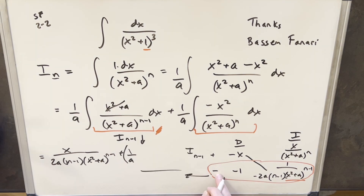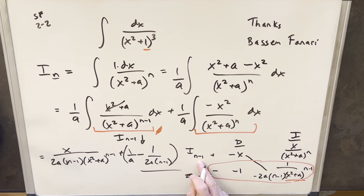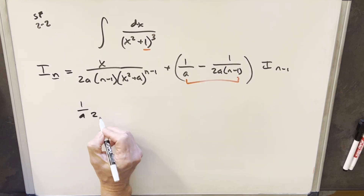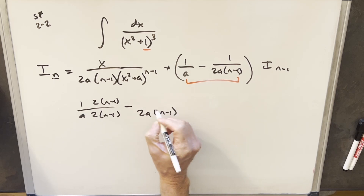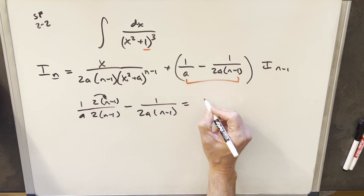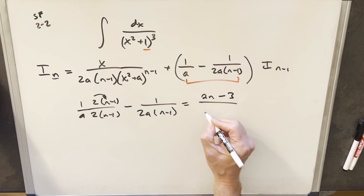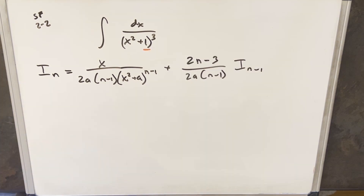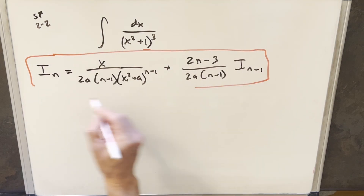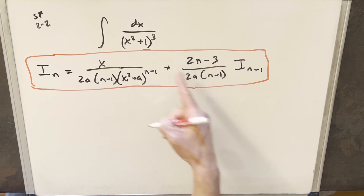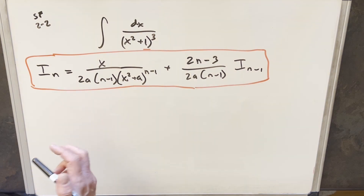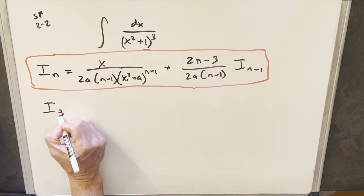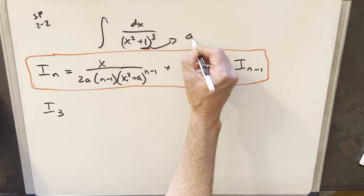Combining the I sub n minus one terms: the minus and minus cancel to give a plus, but we have a minus out front, so it's minus. We get minus one over 2a(n minus one) combined. Multiplying one over a by 2n minus one in the numerator and denominator gives the same denominator, and distributing yields 2n minus 2 minus one, which is 2n minus 3, all over 2a(n minus one). This is our recursive formula. Notice a equals one for our specific problem.